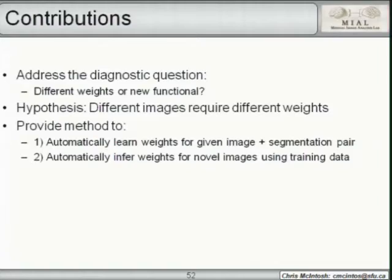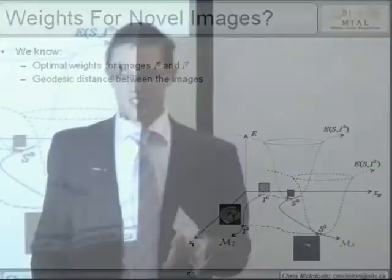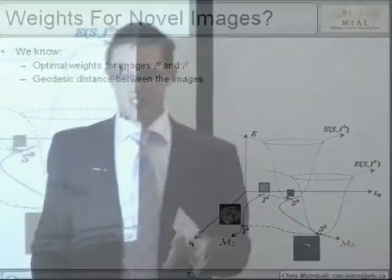For novel images, we know the optimal weights for training images I0 and I2. We can then calculate the geodesic distance between those training images and a novel image IJ, and use those distances to infer appropriate weights for the novel image.